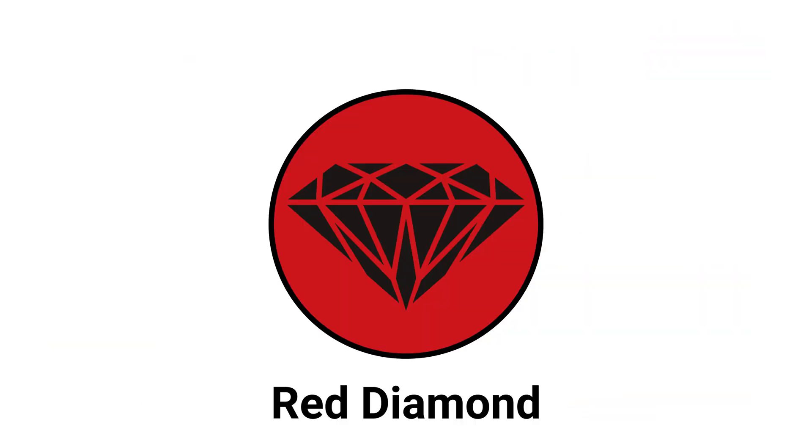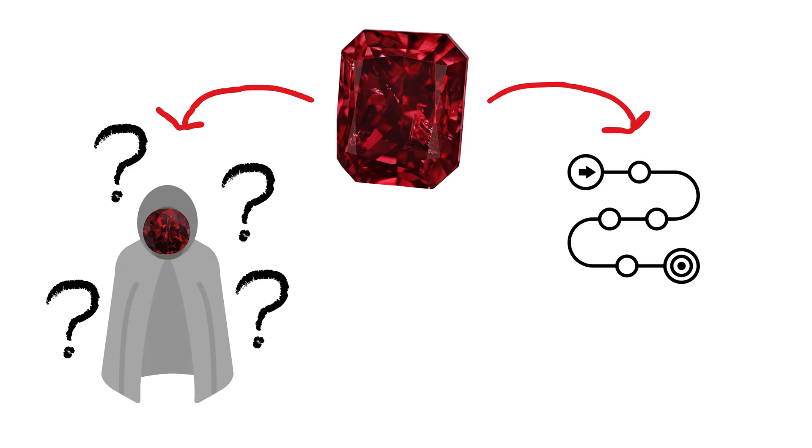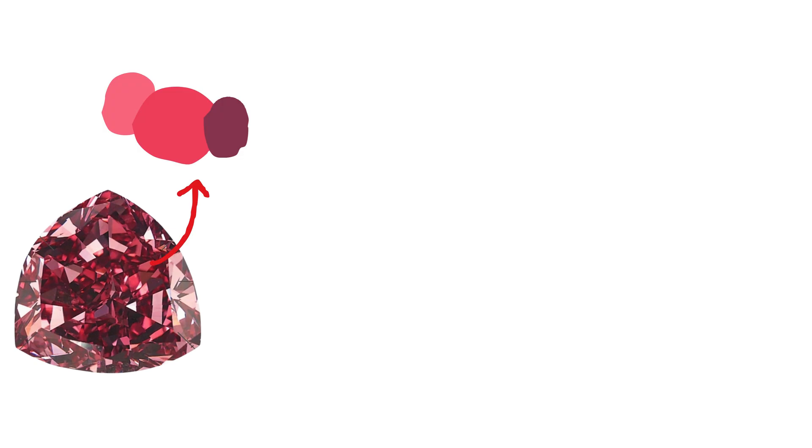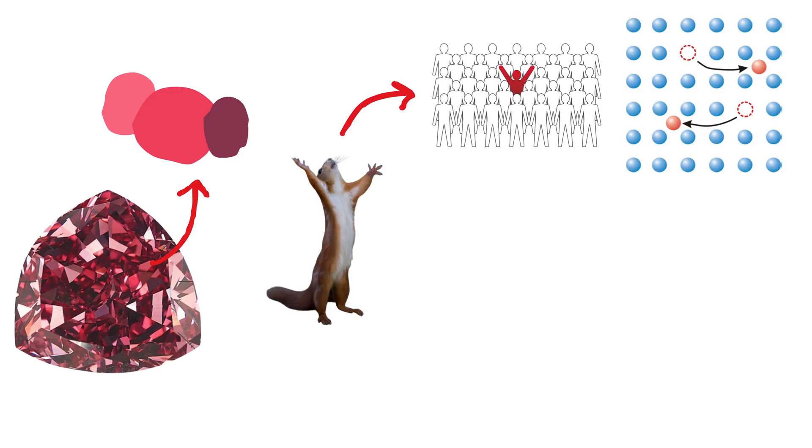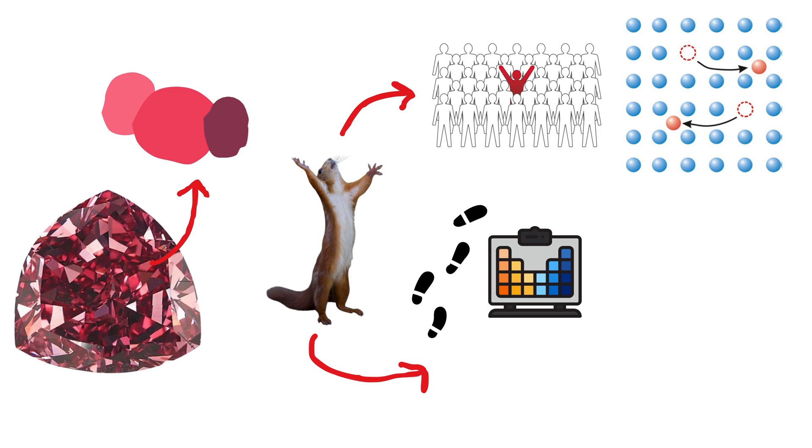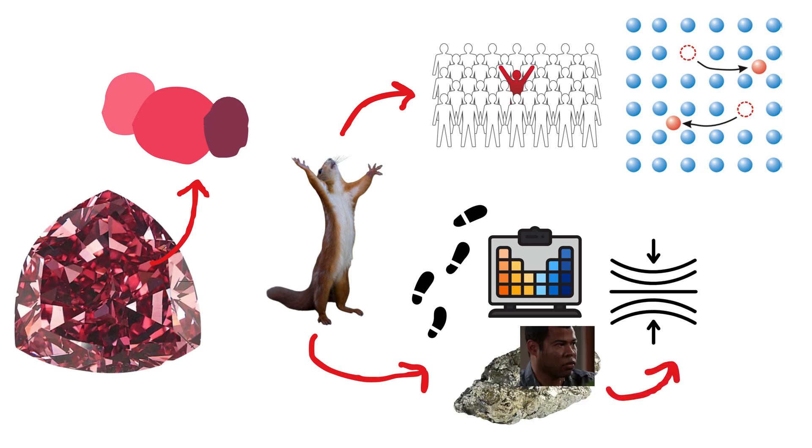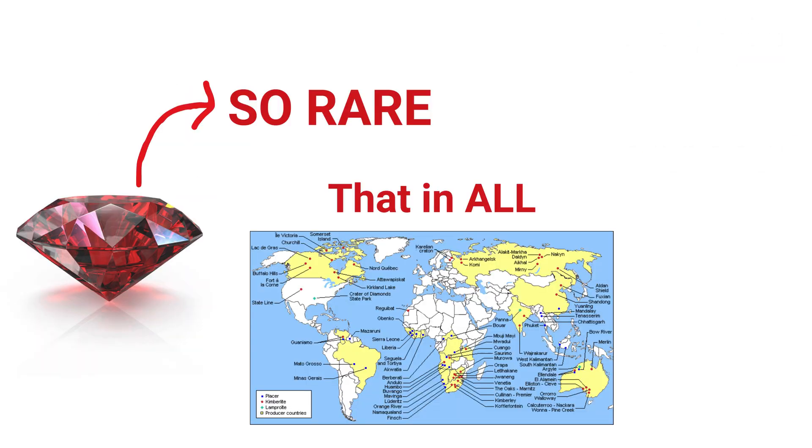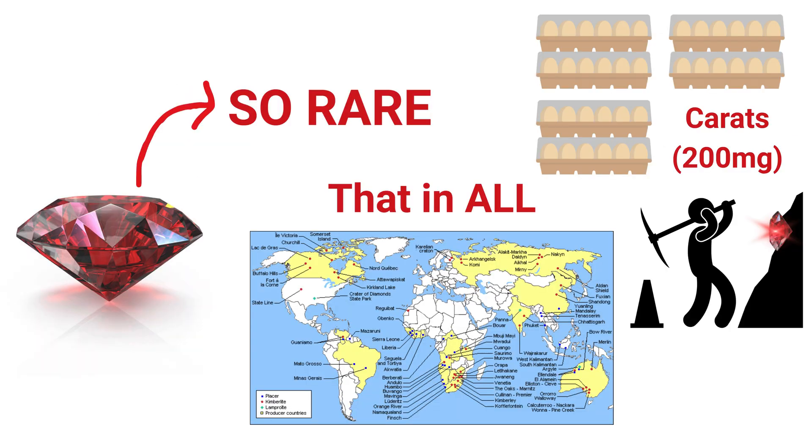Red Diamond. Red Diamonds are shrouded in mystery and formed under extraordinary conditions. Their intense red color is believed to arise from unusual lattice defects and trace elements such as manganese under extreme pressure and temperature. Red Diamonds are so rare that in all known deposits, only a few dozen carats have ever been found.